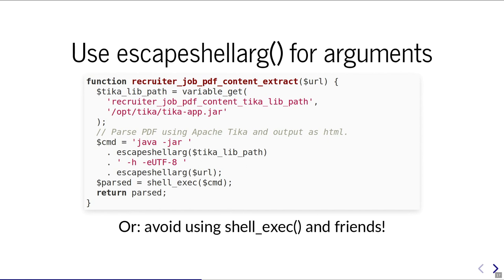PHP has a built-in function called escapeshellarg. Whatever goes into that command needs to be escaped with escapeshellarg, and then we are safe. I do this for the URL and also for the tika.lib variable — it probably doesn't need to be escaped since it's provided by the developer, but you always want a defense-in-depth approach. Even if an attacker injects something into a variable, we would still escape it. It's also good to avoid using shell_exec altogether — maybe use Apache Tika as a service via an HTTP request, which is also much safer.